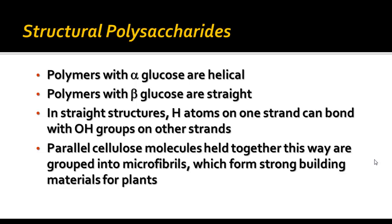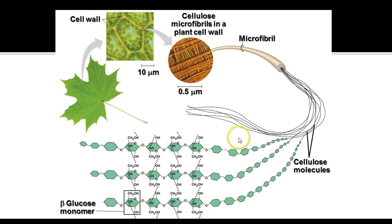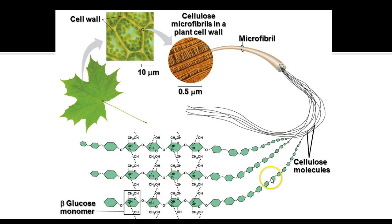Parallel cellulose molecules are grouped into microfibrils, which can form very strong building materials for plants. The cellulose molecules have hydrogen bonds — attractions between the chains — and they twist up to form long cellulose molecules that make fibrils, which then twist together to form microfibrils. Looking closely at the cell wall, you can see crisscrossing microfibrils that give it a very strong structure.